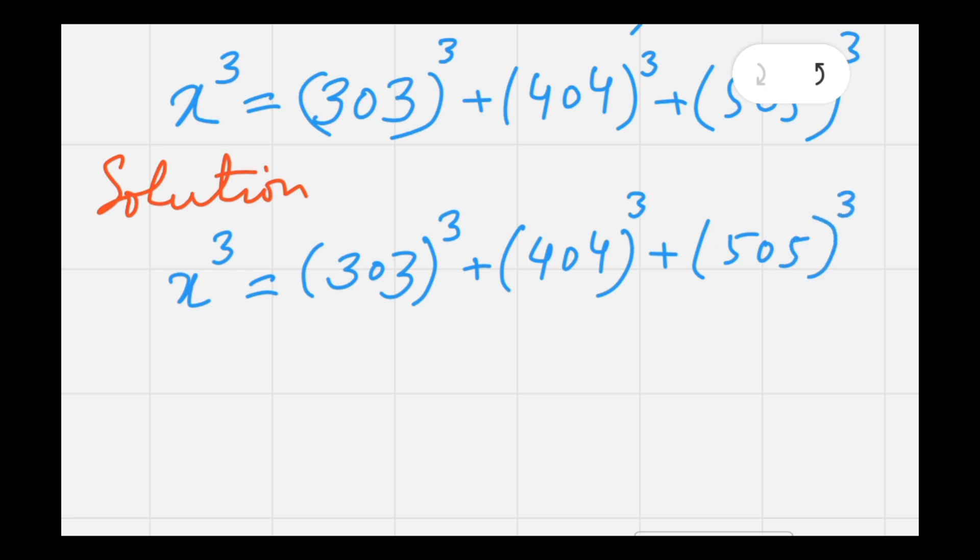Now if you notice on the right, every cube is a product of 101, so we can factor it in terms of 101. That is 3 times 101 cubed, plus 4 times 101 cubed, plus 5 times 101 cubed.